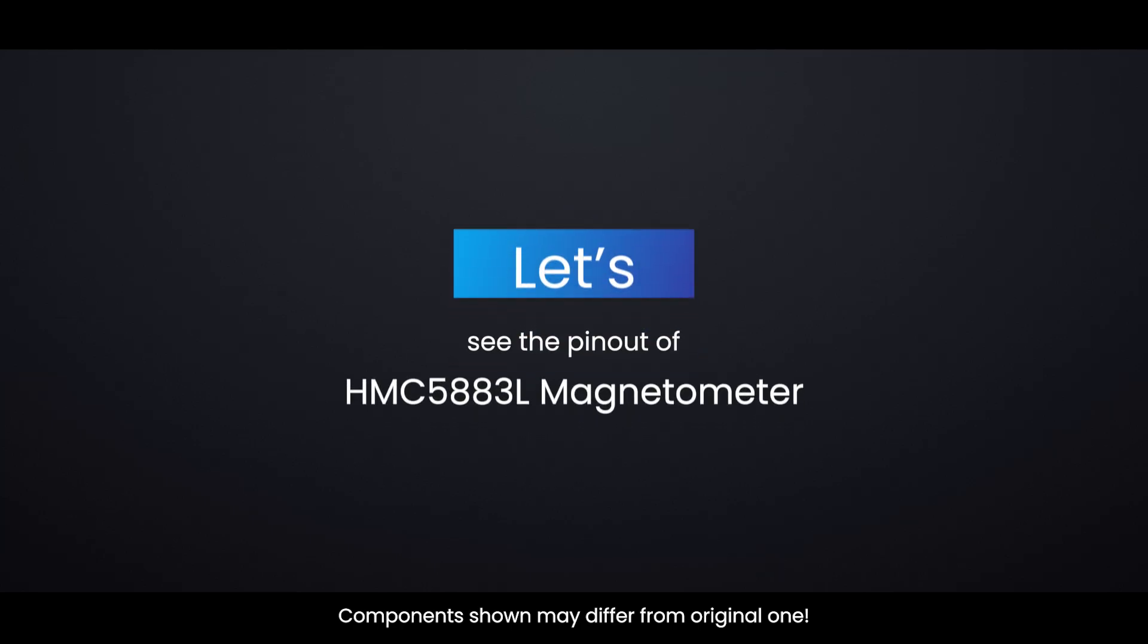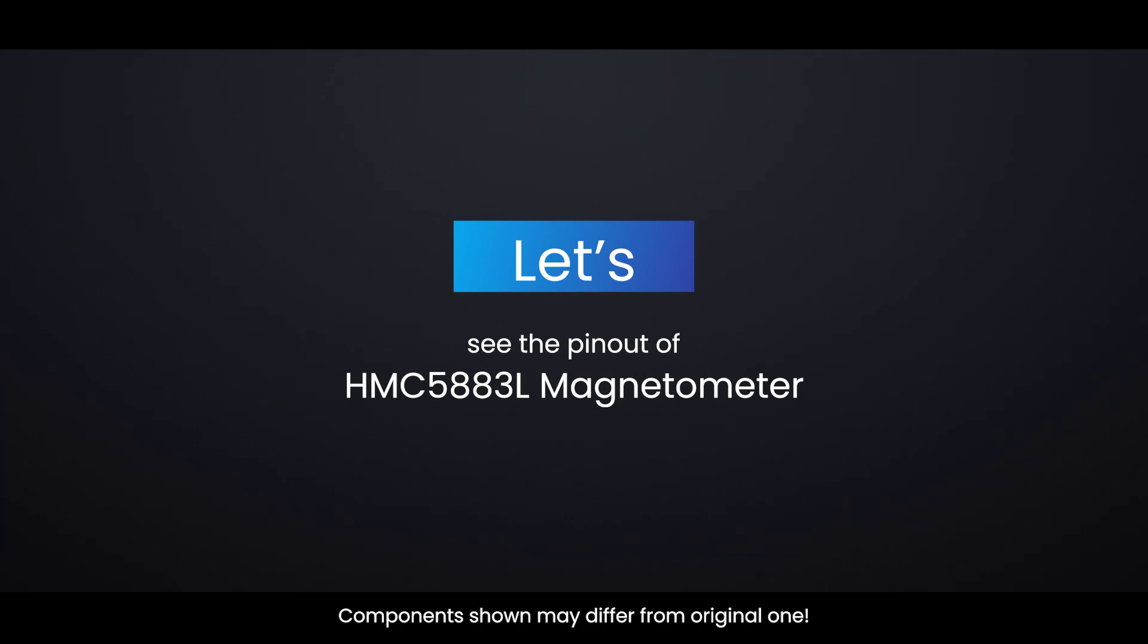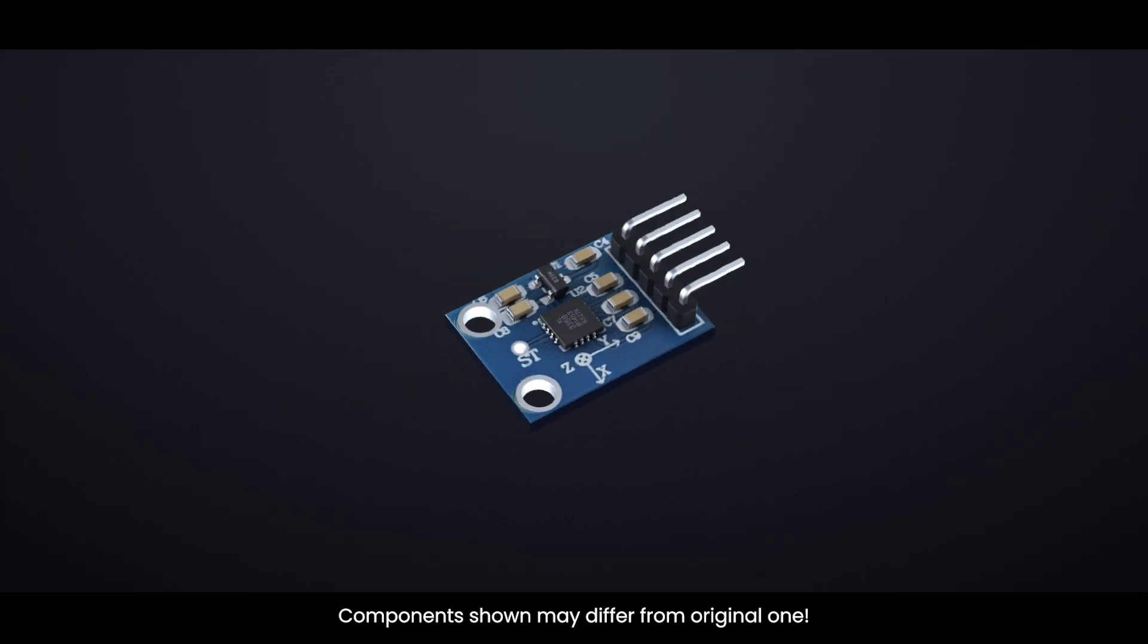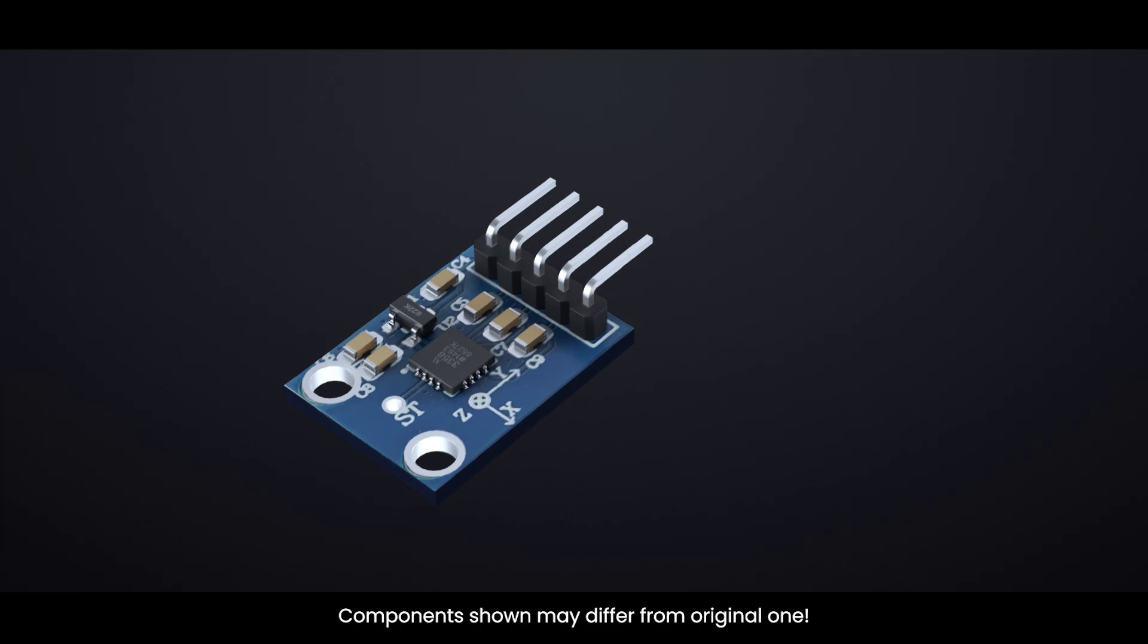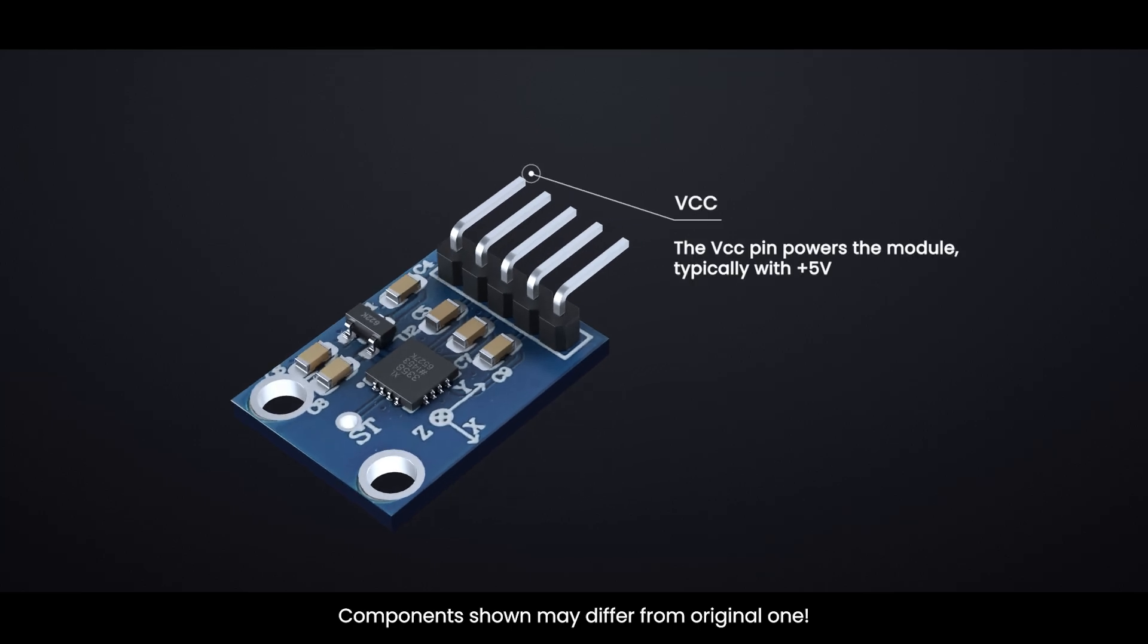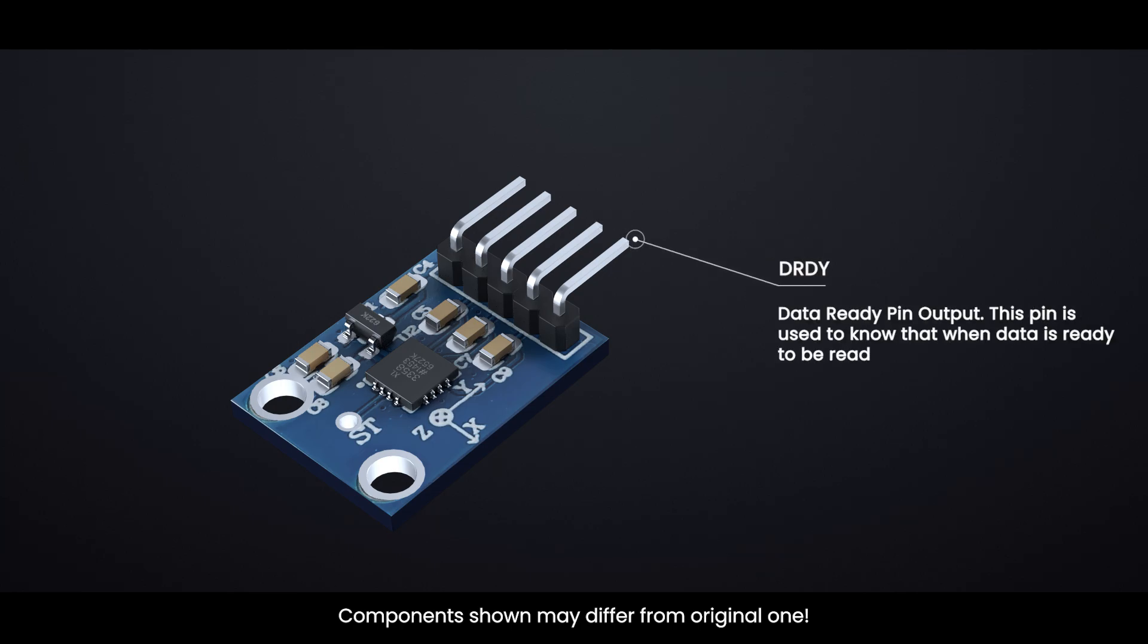Let's see the pinout of HMC5883L sensor. The VCC pin powers the module, typically with plus 5 volts. GND is the ground pin. SCL is the serial clock pin. SDA is the serial data pin. DRDY is the data-ready pin output. This pin is used to know when data is ready to be read.